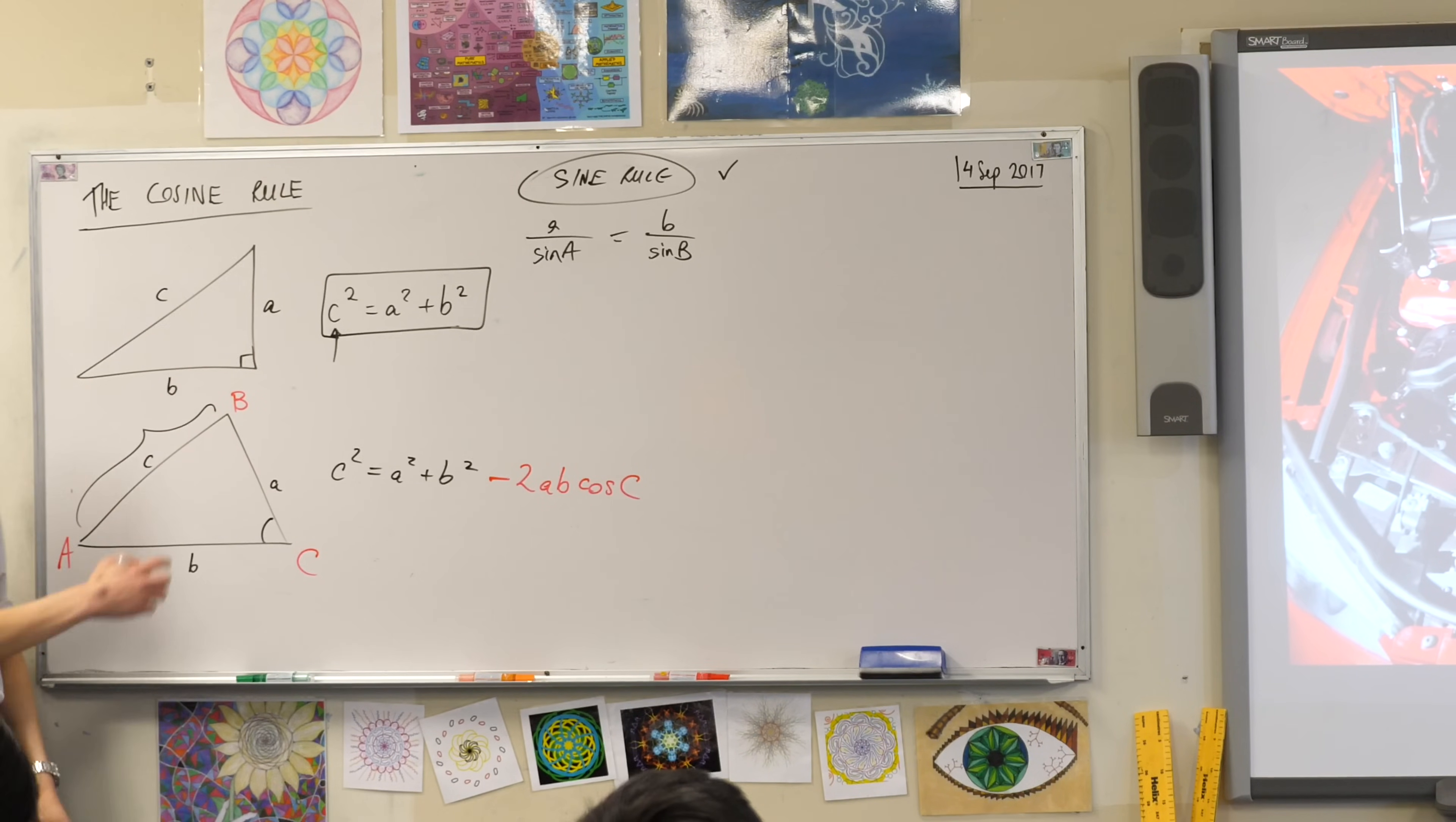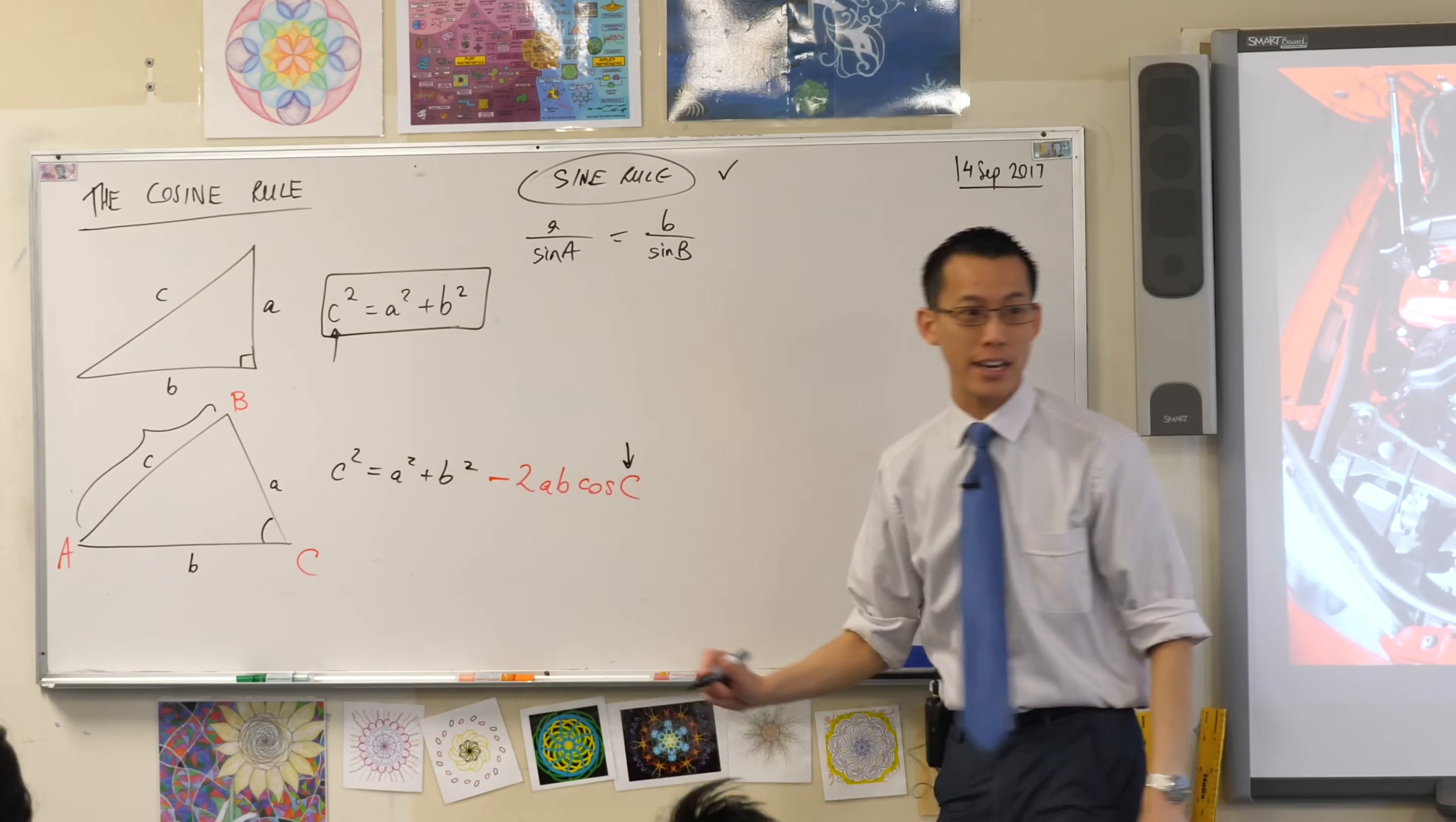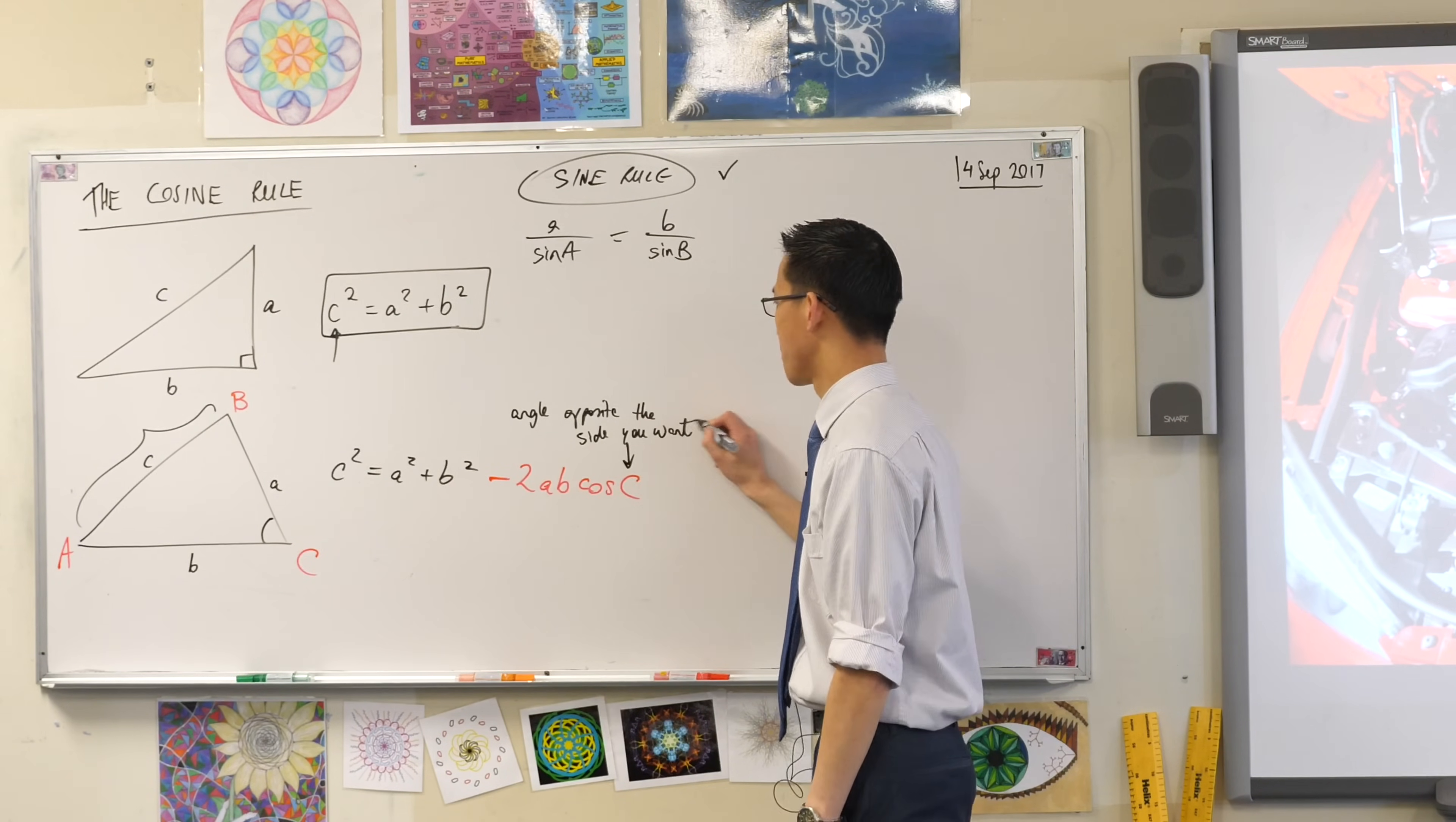So, what do you need to find that side? You need the other two sides, A and B. And then you need this guy. This is not just any angle, it's a particular angle. Which one is it? Opposite. It's the angle that's opposite. Can you please write that down? When you label this angle here, it's a specific angle. It's the angle opposite the side you want. I'm going to write that. Angle opposite the side you want.